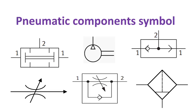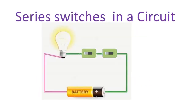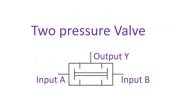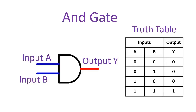The two-pressure valve works on the same principle as a series circuit and AND gate. The output is true if both pressure inputs A and B are true, otherwise it's false. In the equivalent series circuit, the bulb only glows if both switches are on. The AND gate output is 1 if both inputs A and B are 1, otherwise it's 0.